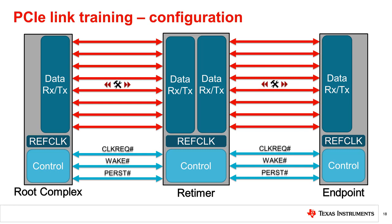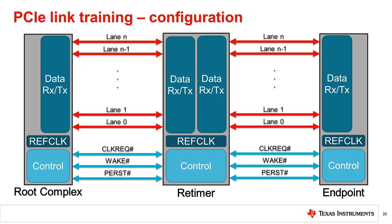In the configuration state, a lane-to-lane deskew process takes place in which any misalignment in the data due to varying channel length is compensated for. The PCIe link width is also determined at this stage. At the end of this process, each lane will be associated with a specific link number and a lane number within that link. If there are multiple links, the PCIe connection is referred to as bifurcated. However, in our example, we have a single non-bifurcated connection and all lanes will be assigned to link number zero. Keep in mind that the link is split in two parts due to the PCIe retimer, and the link on both sides of the retimer undergoes link initialization separately.